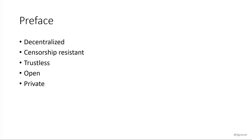I'm sure everybody's heard of the elephant in the room — this is just a play on that phrase. When we're all here, I'm presuming everybody in this room has come to cryptocurrencies for some really key fundamental points: decentralization, censorship resistance, trustless, open, and private. These are fundamental to why we're all here, why we're all participating in this wonderful space.